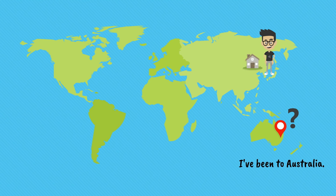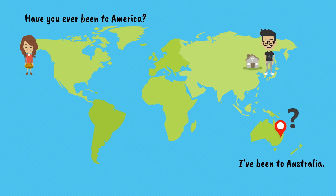So when someone asks you, 'Have you been to Australia?' it means, have you been there any time from the day that you were born until now? We often use 'never' to emphasise negatives and 'ever' to emphasise questions about past events. For example: 'Have you ever been to America?' — 'No, I've never been to America.'